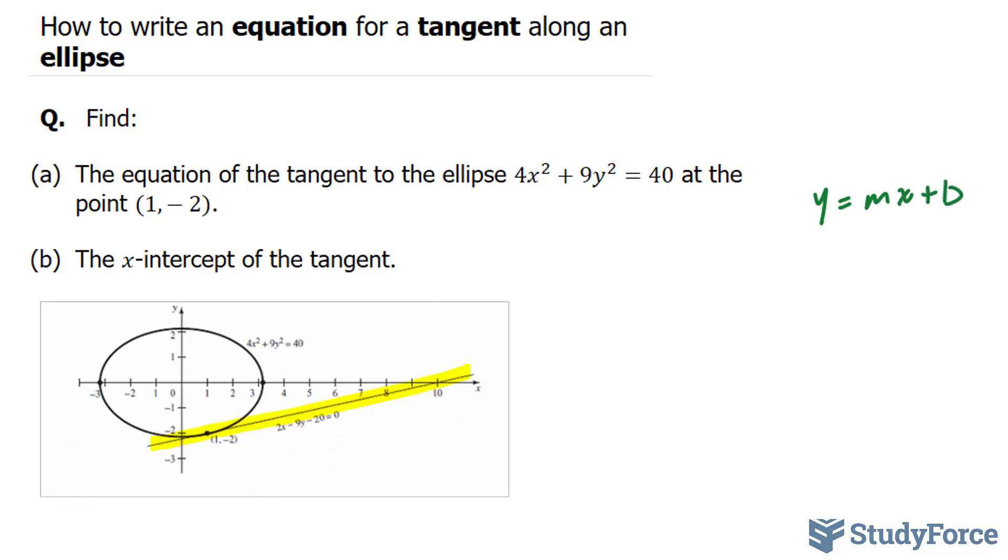What we need to do is find the derivative of this equation, of this ellipse, and then evaluate that derivative at the point 1 and negative 2. What that will do is give us the rate of change at that specific point for this ellipse. I'm going to take the derivative of this equation with respect to x. We have to do this implicitly because there are two types of variables, x and y.